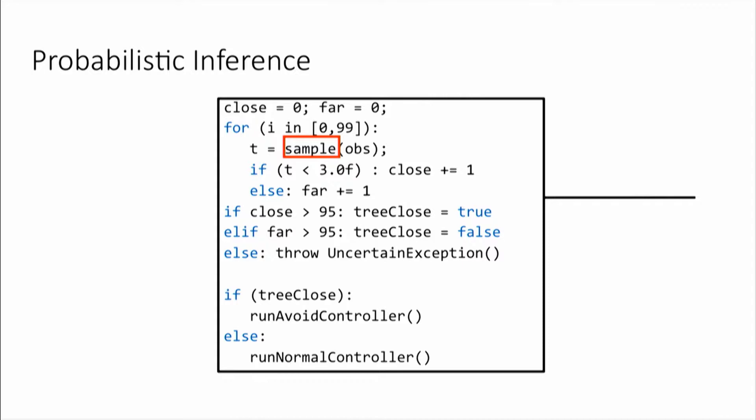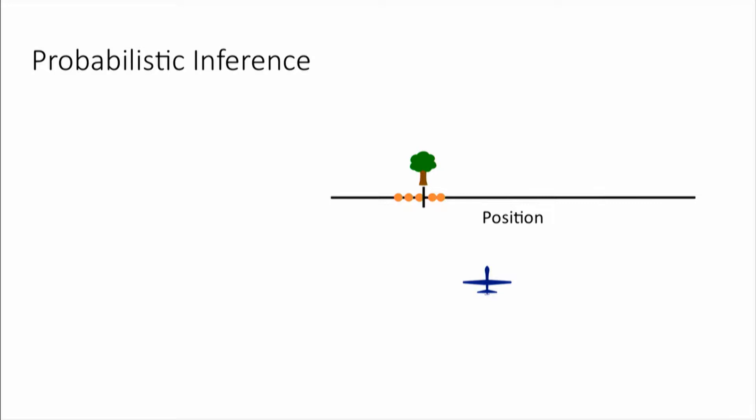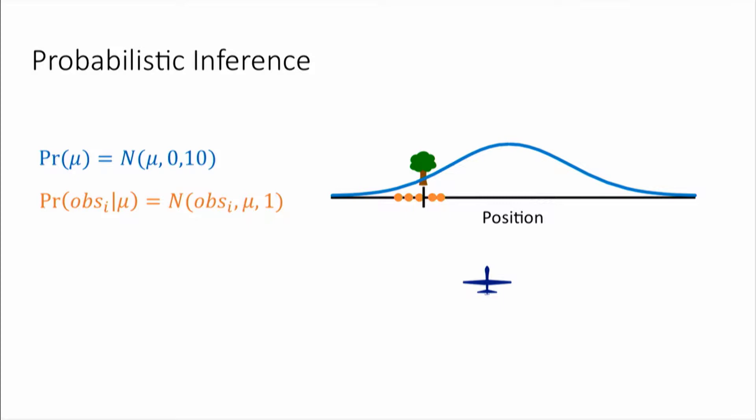I'm going to show you how I would write this sampling program. My first step is to write down a probabilistic model. The first step of that is to write down a prior on the tree's location — I'm using mu to refer to the true location of the tree. My prior distribution of mu is a normal distribution with mean 0 and variance 10. Next, I write down the likelihood of the ith observation given mu — also a normal distribution with mean mu and variance 1.